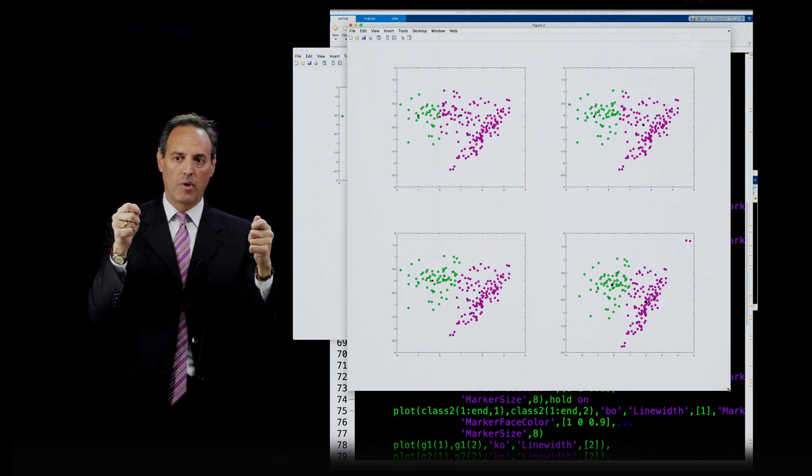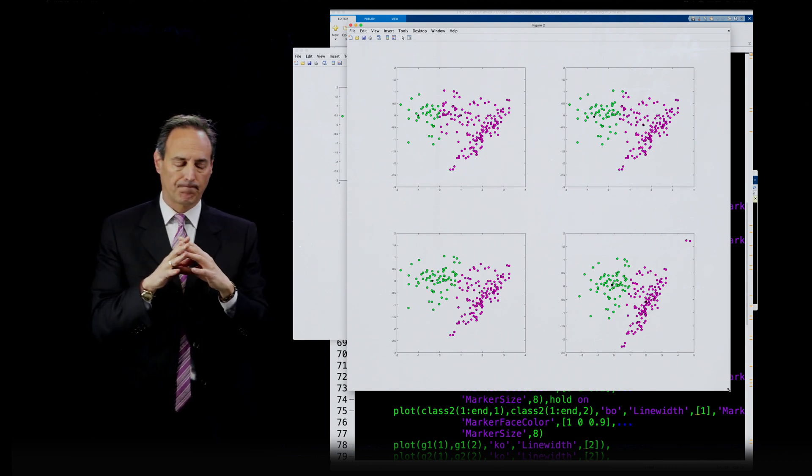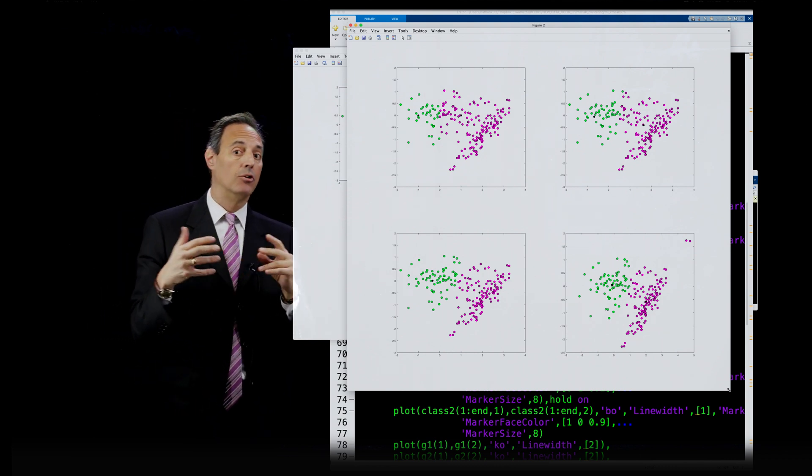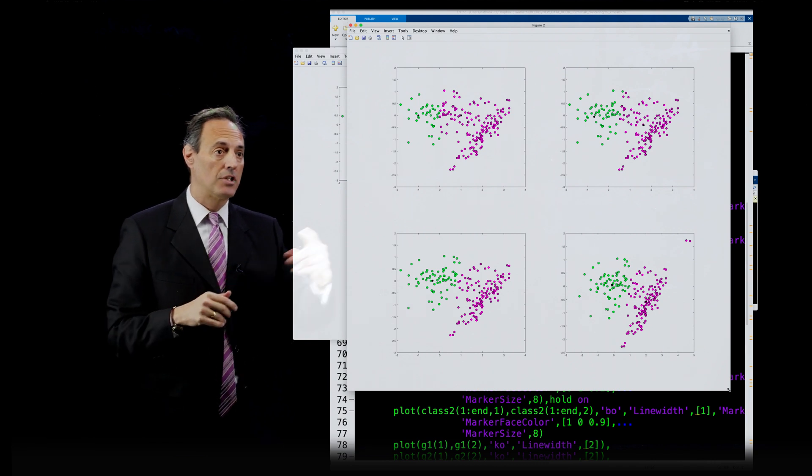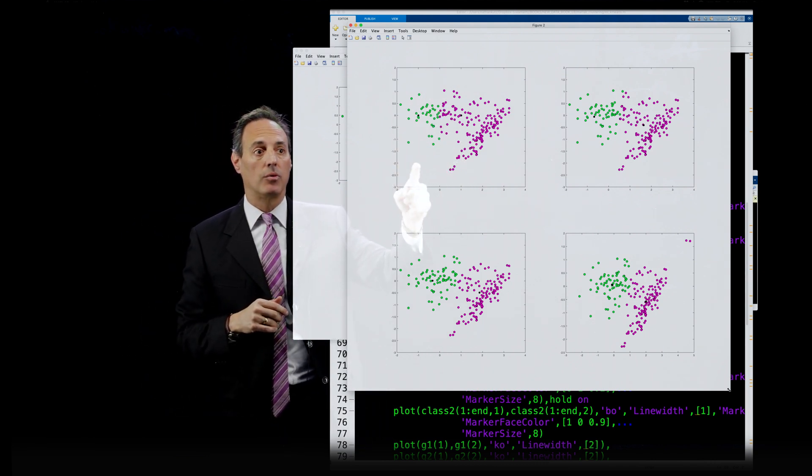Pick two points randomly. All the data has to belong to one or the other class. Step two is that you update the centroid. Now you say, okay, now that I've done this, figure out where the center of mass of that green is. That's the new black point here.